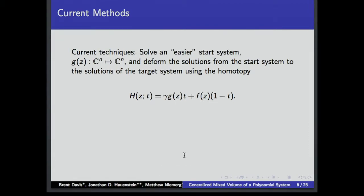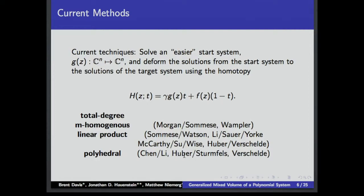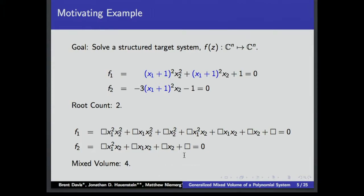What do our current methods do? They construct a homotopy — we start with some start system G(z) and move to F(z). We can use total degree, multi-homogeneous, linear product, or polyhedral methods. The downside is that none of these methods take into account the extra structure. Even with polyhedral methods, we'll track 4 paths but still end up with 2 extraneous paths. We want to reduce this extra work.